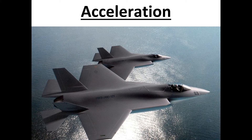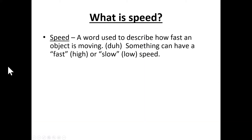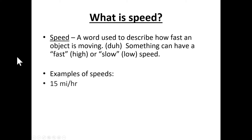Before we begin, let's hammer down some definitions that lead up to acceleration. What is speed? Speed is a word used to describe how fast an object is moving — something you can have a fast or high speed, or a slow or low speed. Examples of speeds: 15 miles an hour, 20 feet per second, 45 meters per second, 70 kilometers per minute. These are all speeds.